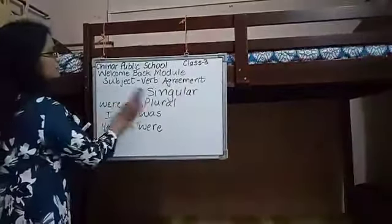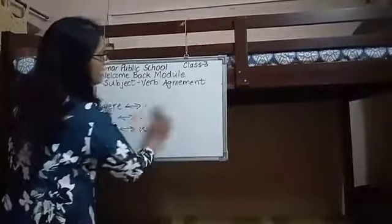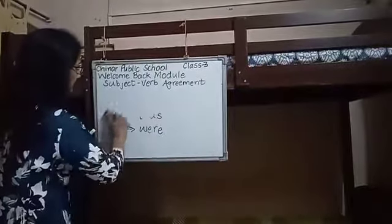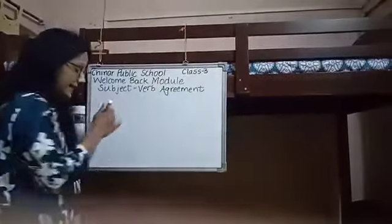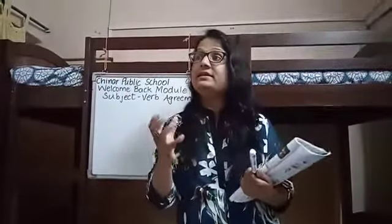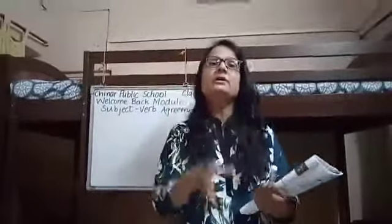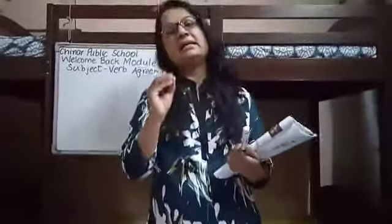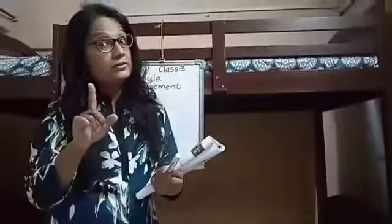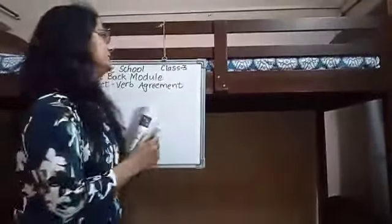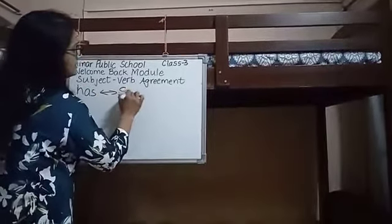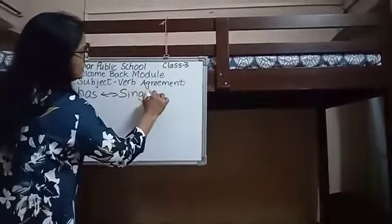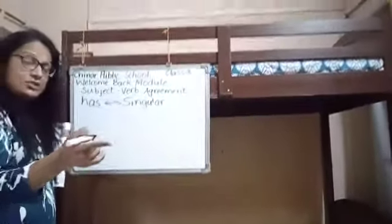Now comes the point where we have to use 'has' and 'have'. 'Has' and 'have' show belongings — things that belong to us or to different people. 'Has' is used with singular nouns or pronouns. For example, 'He has a toy car.'